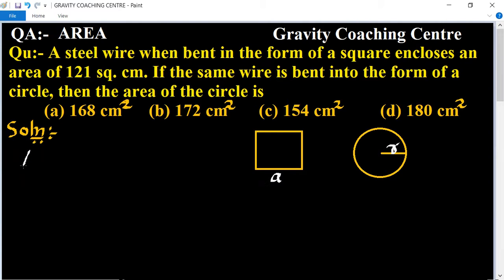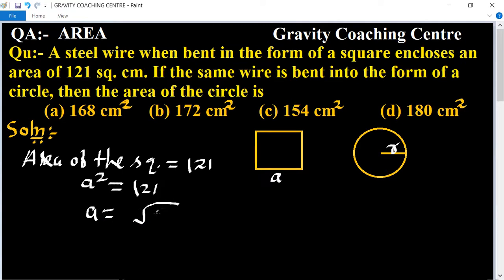According to the question, area of the square equals 121 square centimeters. We know that the formula of square area equals side into side, means a² = 121. Then a = √121, so its square root is 11.